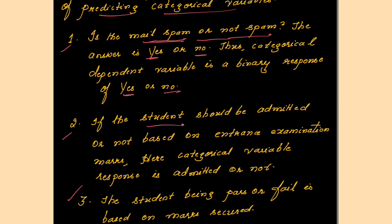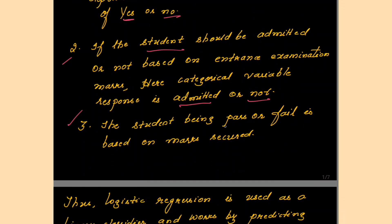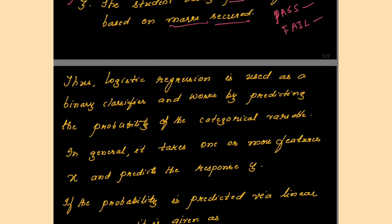A second example: should a student be admitted or not based on entrance examination marks? Here the categorical variable response is admitted or not. A third example: whether a student passes or fails based on marks secured. From logistic regression we will be getting such categorical responses.